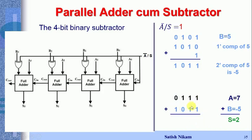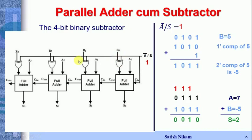Performing 0111 + 1101: 1+1=0 carry 1; 1+1+1=1 carry 1; 1+1+0=0 carry 1; 1+1+0 carry 1 — discard the final carry, giving output 0010 = 2. In the circuit, /S = 1 is applied to one input of every XOR gate, so each B bit gets complemented.